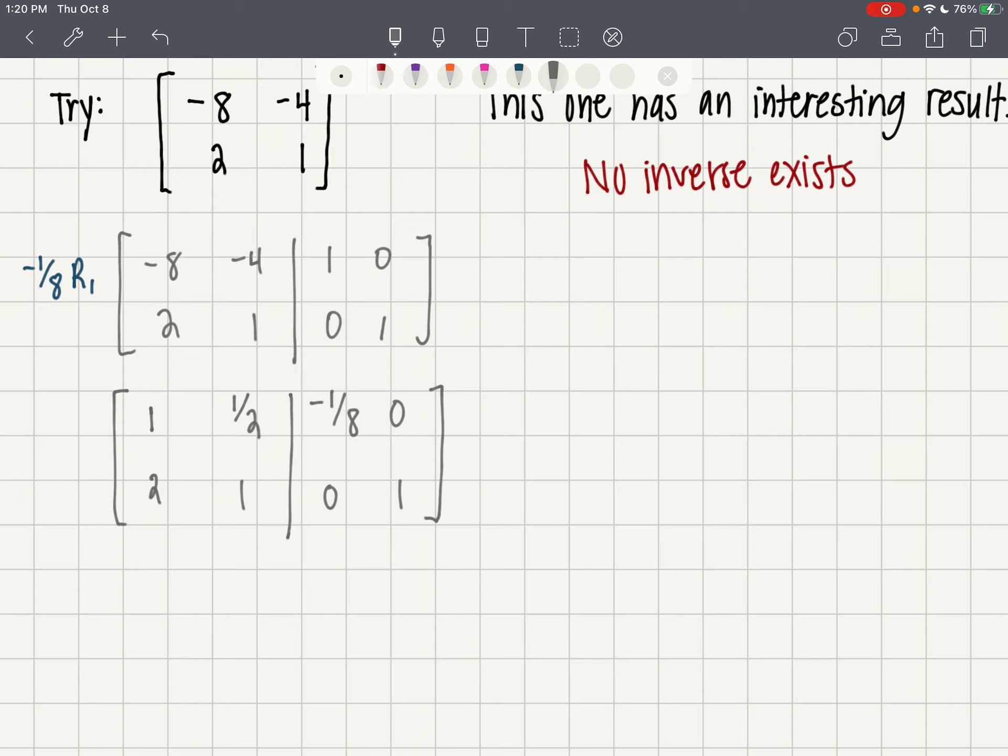Now the second row, I want this two to be a zero, so I'm going to take row one times negative two and add it to row two. So row one stays the same.